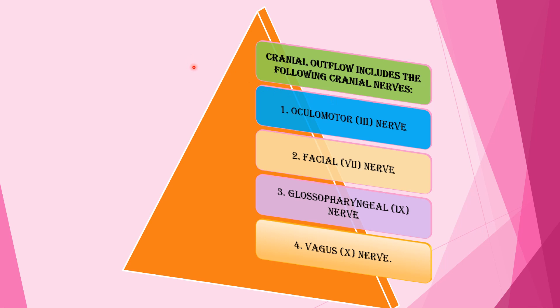Cranial outflow includes the following cranial nerves: the 3rd, 7th, 9th, and 10th cranial nerves — oculomotor, facial, glossopharyngeal, and vagus nerve.